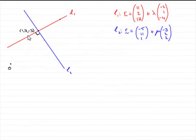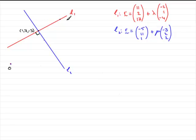Before we start this part of the question, I've updated the diagram with the coordinates of the point where the two lines intersect, which we found out from the last part: 1, 7, minus 3. For this part of the question, we're told that we've got a point A on the line L1, and we're told that it has position vector 9, 3, 13. So the coordinates of this point A are going to be 9, 3, 13.